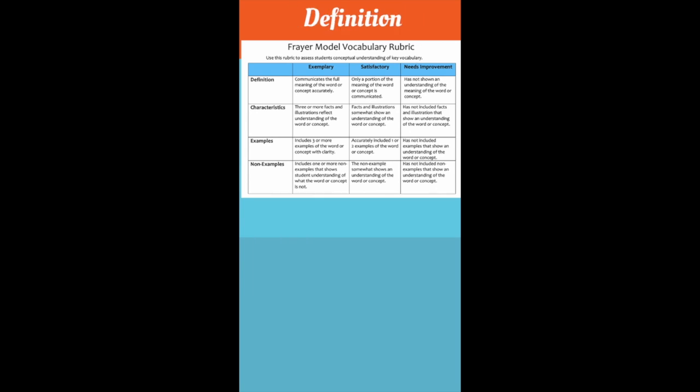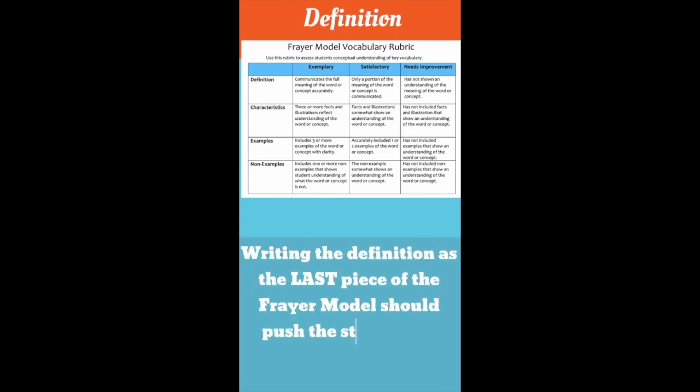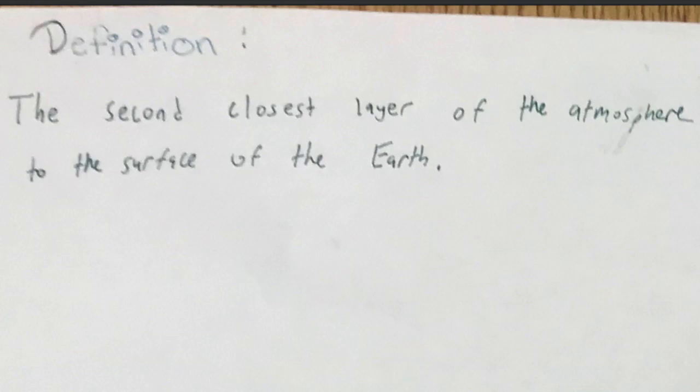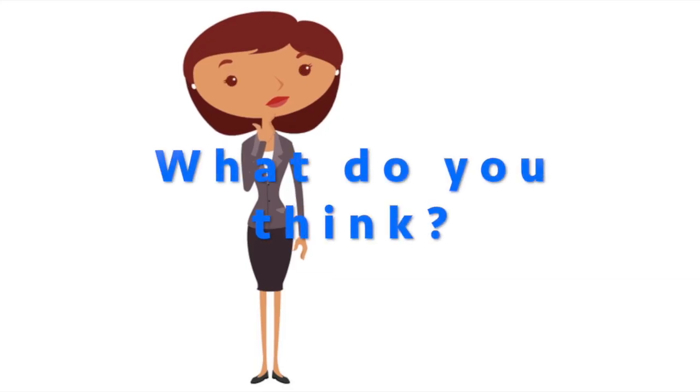Finally, guide the student to pull all this information together to create their own definition for stratosphere. The student summarizes with this definition: the second closest layer of the atmosphere to the surface of the earth. What do you think?